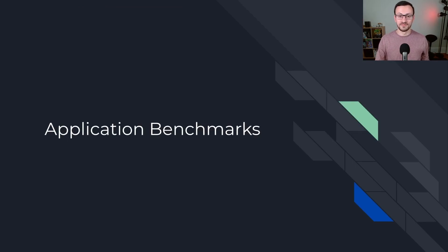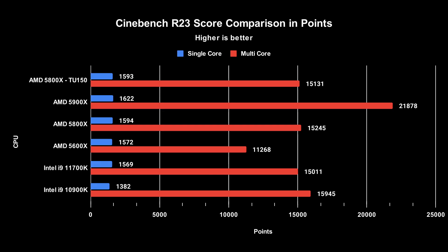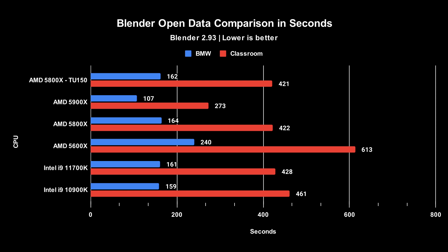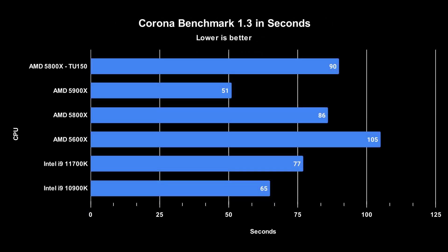Let's jump right into application benchmarks. I tried to pick the more popular benchmarks, so it gives you an easy way to compare to your system or to other systems. I don't have specific comments for each of the following benchmarks, so if you're interested in a specific one, just pause the video. Along with measuring the performance of my PC, I also compiled a list of benchmarks from similar processors from both Intel and AMD. The overall theme is that if you have more cores, you're going to be scoring better on these tests — either a higher score or lower time in seconds.